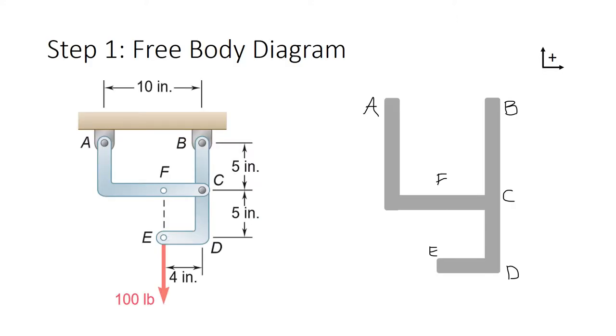Let's make our free body diagram. We already know there's a 100-pound force in the downward direction. We also know the joints at A and B are pins, so they have a reaction force in both the x-direction and y-direction. That's everything for the entire structure.